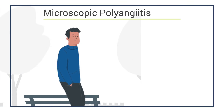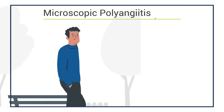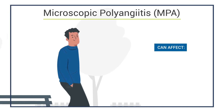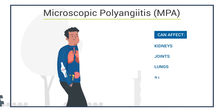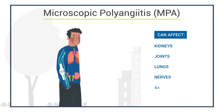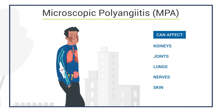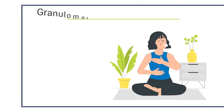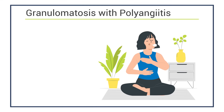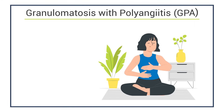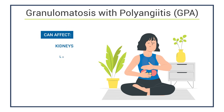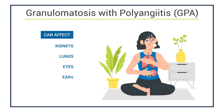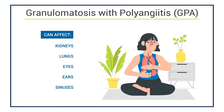Microscopic polyangiitis, or MPA, which can lead to damage in your kidneys, joints, lungs, nerves and skin, among other organs. And granulomatosis with polyangiitis, or GPA, which can lead to damage in your kidneys, lungs, eyes, ears and sinuses, among other organs.